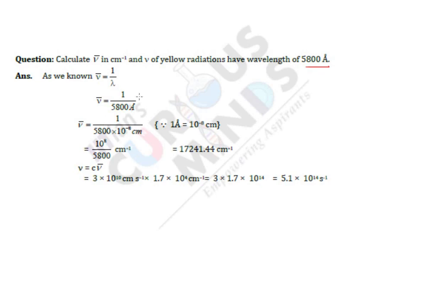Going on to solution, remember this symbol is nothing but wave number and this is frequency. So we know that wave number is nothing but 1 upon lambda. Lambda is given for yellow light, it is 5800.